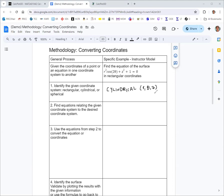And then you want to find equations relating the given coordinate system to the desired coordinate system. So we want to find equations that relate cylindrical coordinates to rectangular coordinates.